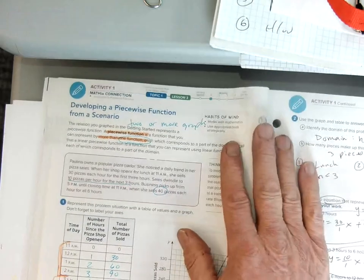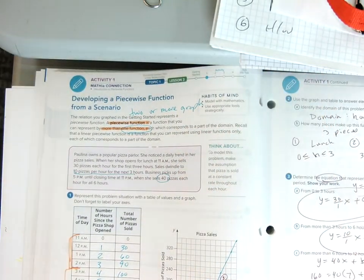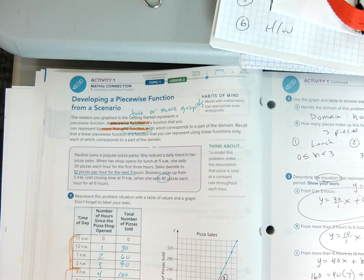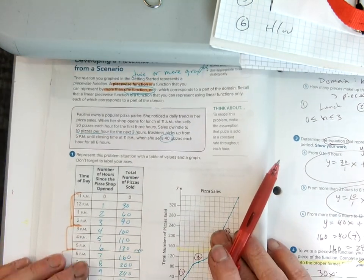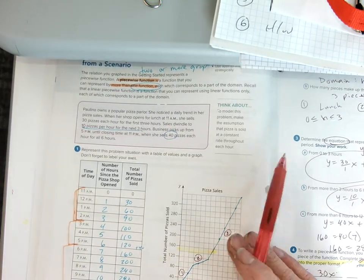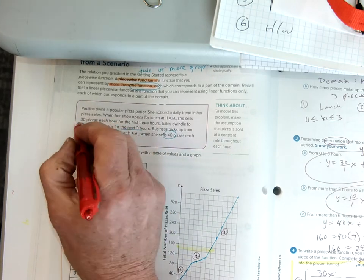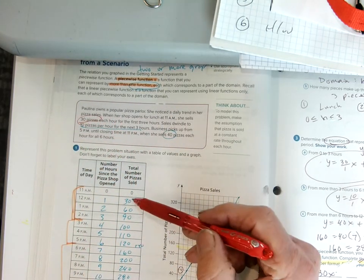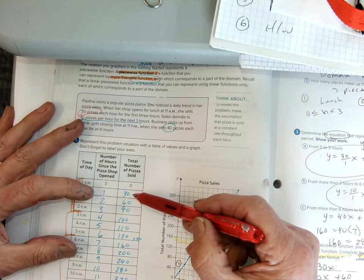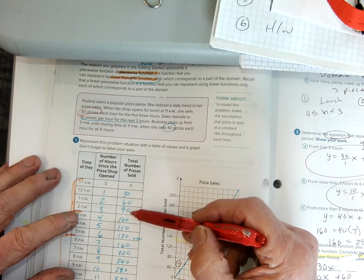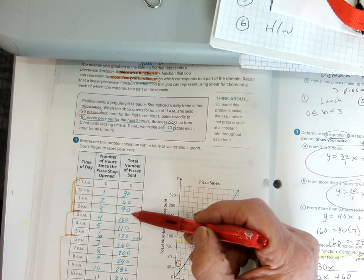So then we had a situation in our notes. We talked on page 500 about a pizza place. So this pizza place has a lunch crowd and then it has a slow time in the afternoon and then it has a dinner crowd. So it turns out that we will sell 30 pizzas an hour in the lunch crowd. So the first hour we sell 30, another 30, another 30. By the time it's up to 3 o'clock, we've gone three hours and we're done selling pizzas.